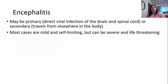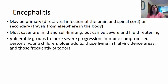Encephalitis may be a primary infection, where the virus or bacteria directly infects the brain or spinal cord, or it could be secondary, where the bacteria traveled from somewhere else in the body to the brain. Most cases are mild and self-limiting because they are normally viral, but they could be severe to life-threatening. Vulnerable groups include the immunocompromised — individuals having cancer treatments, transplant patients on immunosuppressant drugs, individuals with HIV, young children, and older adults whose immune systems are less effective.